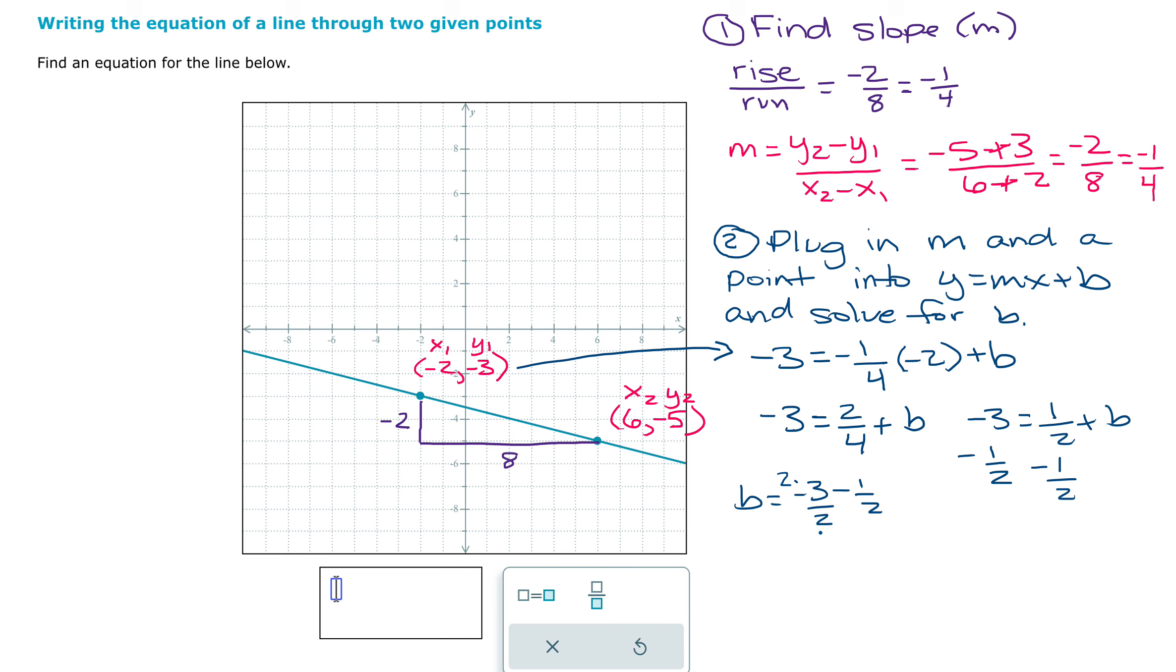So multiply top and bottom of the fraction by two. So that's negative six over two minus one over two or negative seven over two.